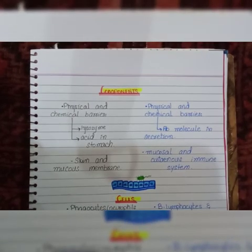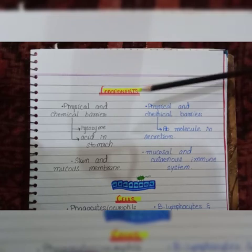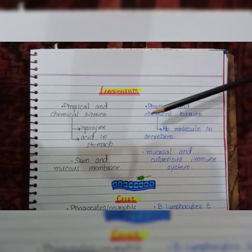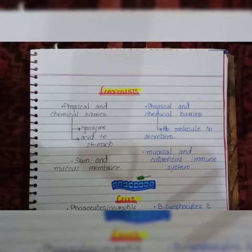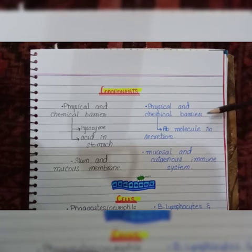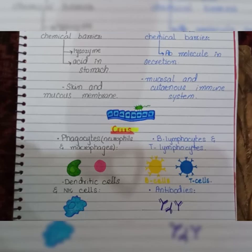Next, we have the components of innate and acquired immunity. For innate immunity, we have physical and chemical barriers. Physical barriers are the skin and mucous membranes; chemical barriers are lysozymes and stomach acid. For acquired immunity, physical barriers include the mucosal and cutaneous immune system, while chemical barriers are the antibody molecules found in secretions.